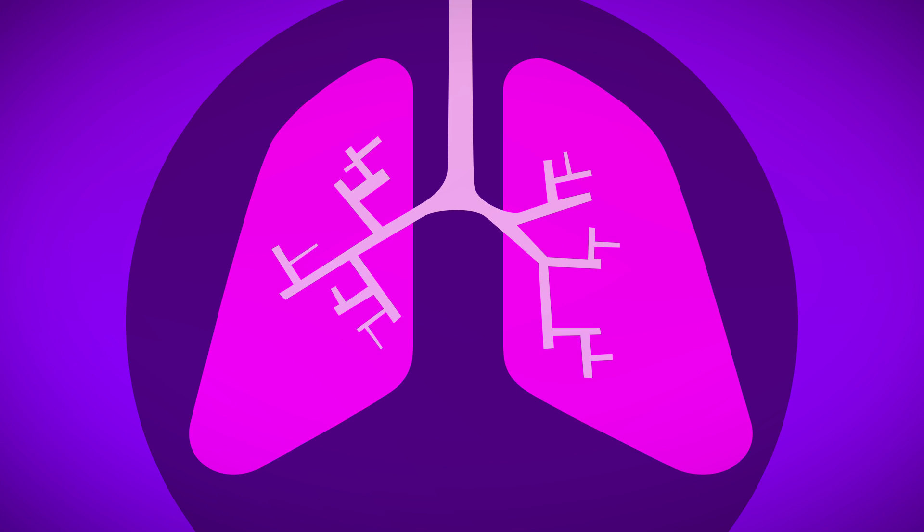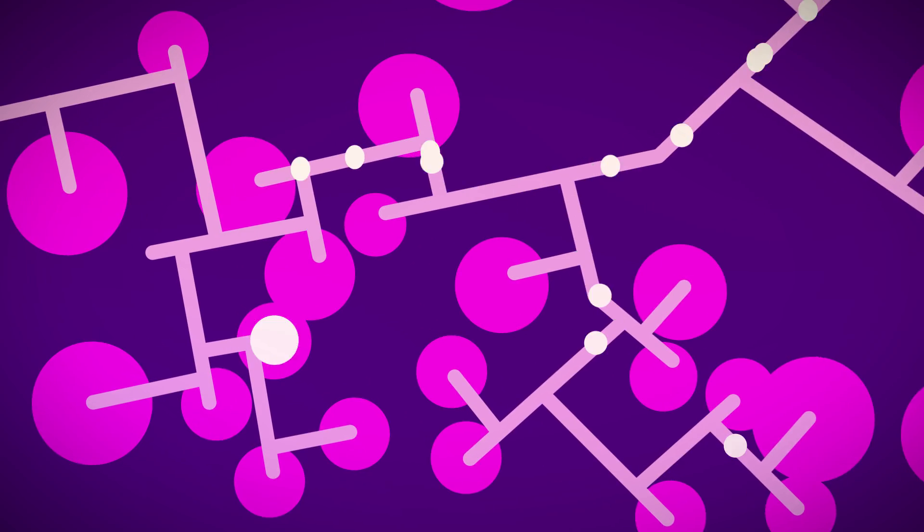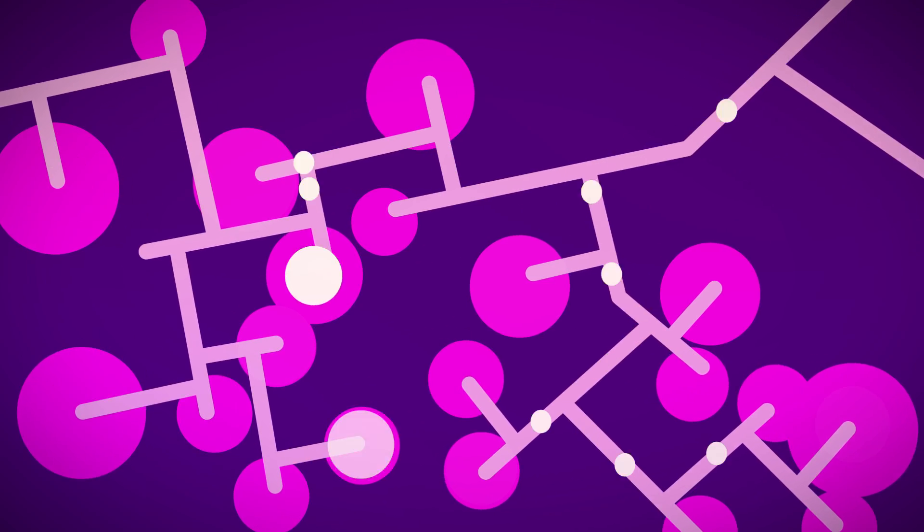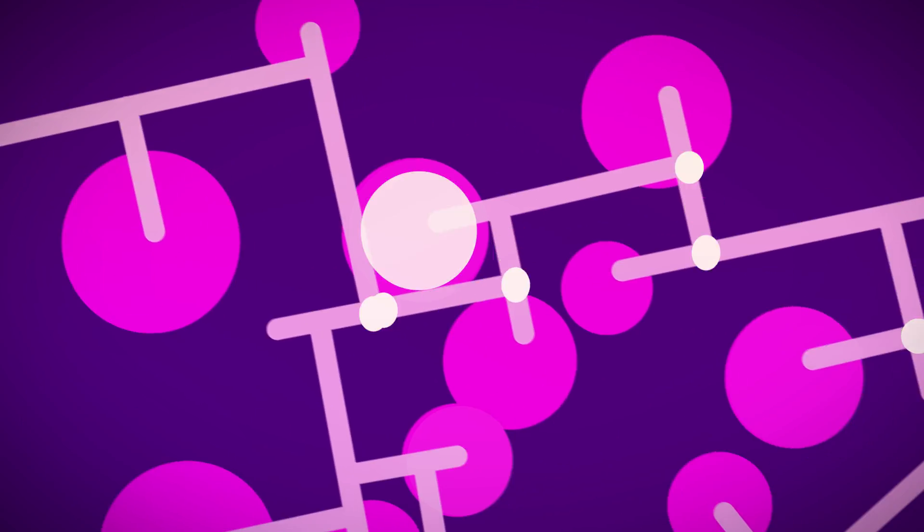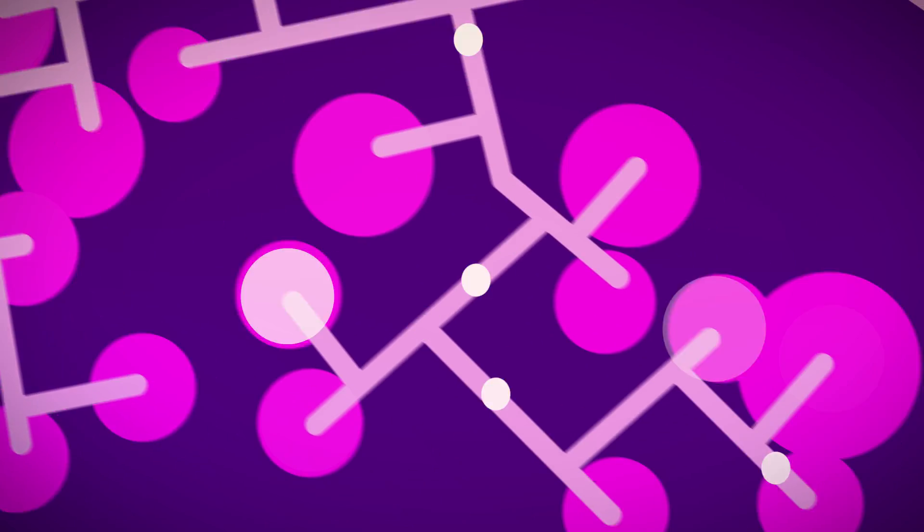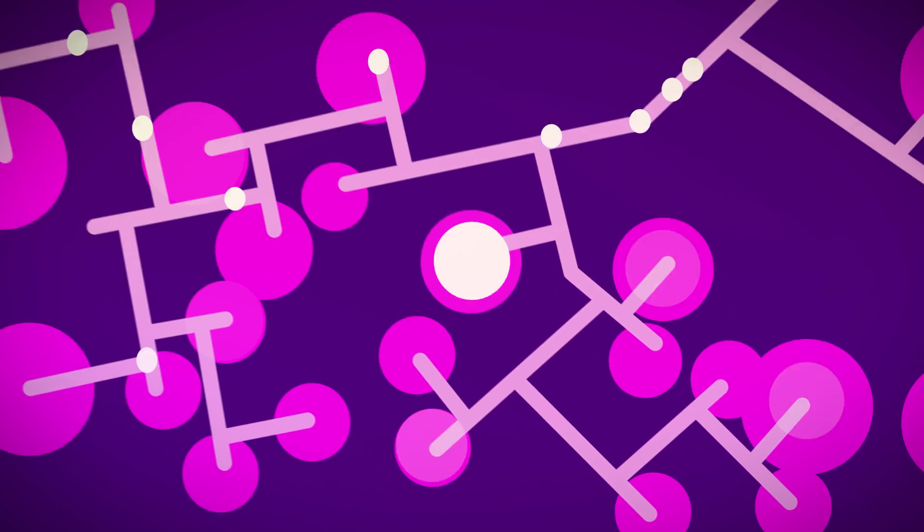When we take a breath, air travels to our lungs where it reaches little air sacs called alveoli. These little sacs allow oxygen from our breath to move into our body. It happens effortlessly and automatically.